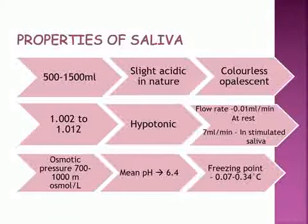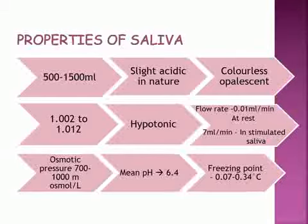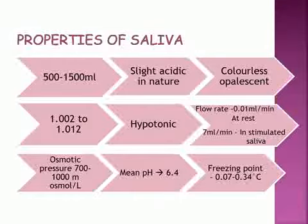The properties of saliva: the daily flow is 500 to 1500 milliliters. It is slightly acidic with a mean pH of 6.4. Saliva is a colorless opalescent liquid with a specific gravity of 1.002 to 1.012. It is hypotonic in nature. The flow rate is 0.01 milliliter per minute at rest and 7 milliliters per minute in stimulated saliva.